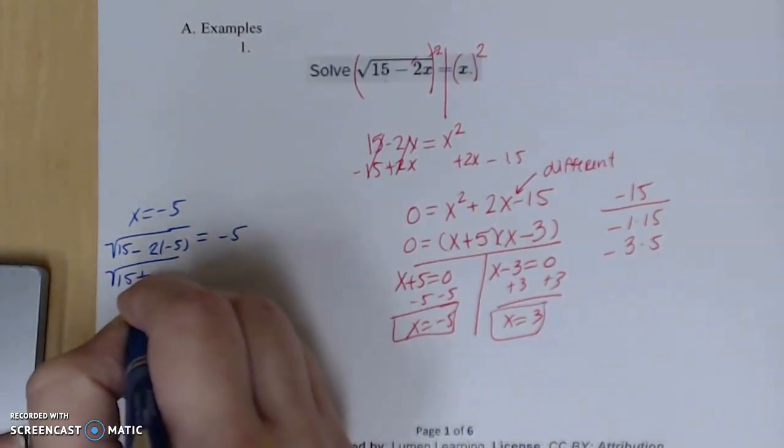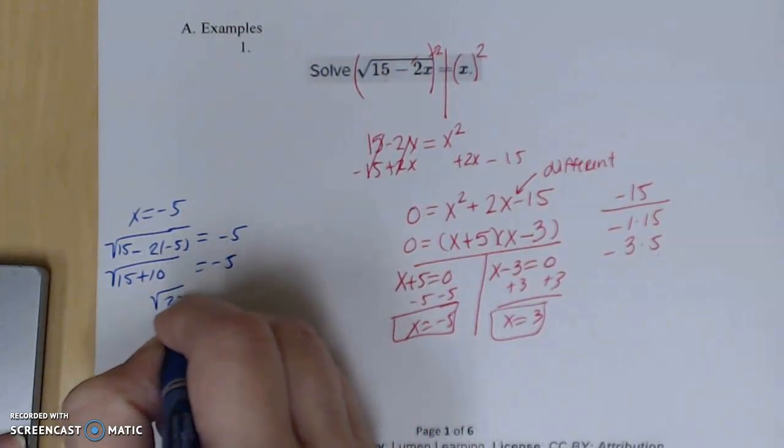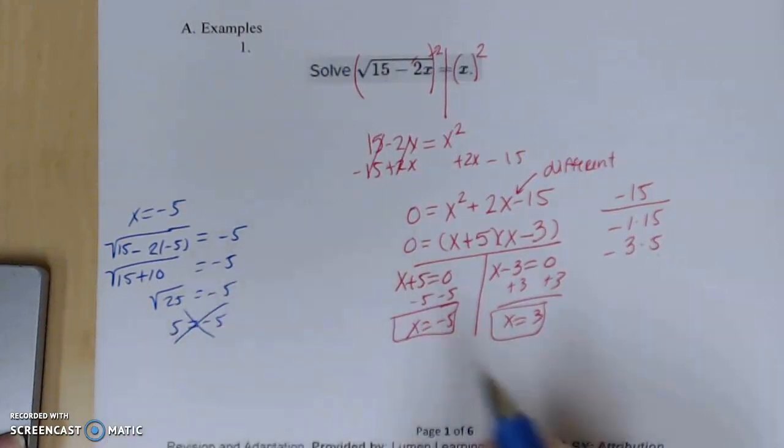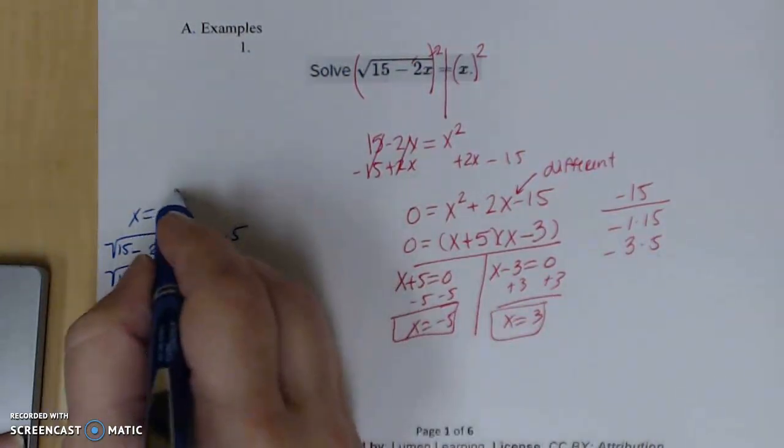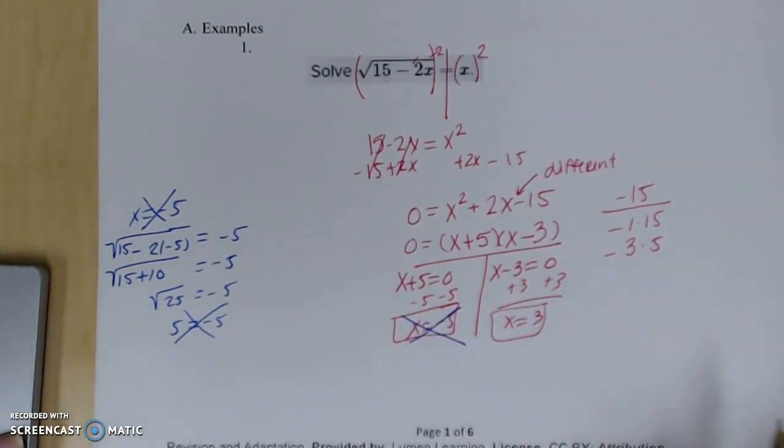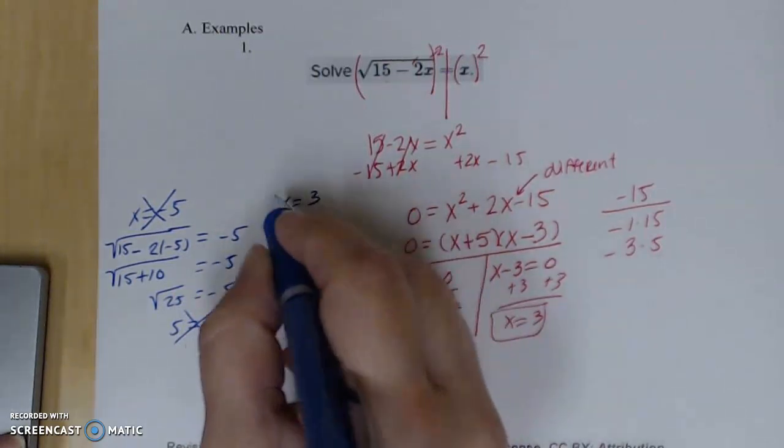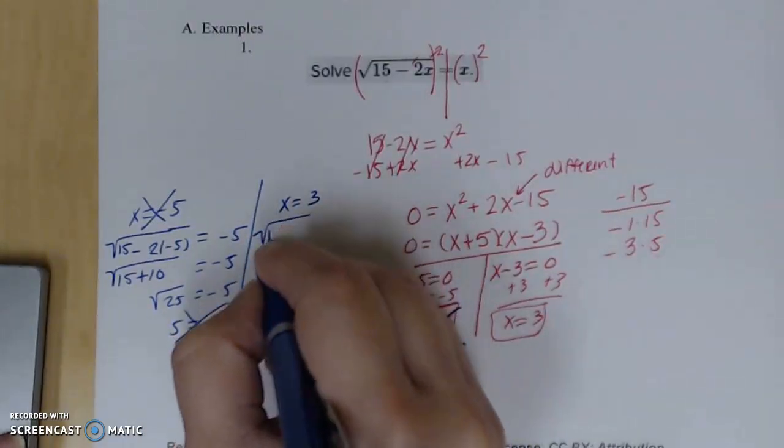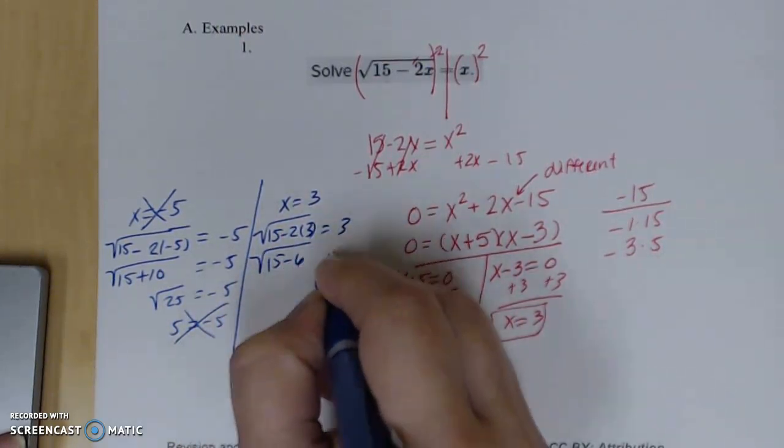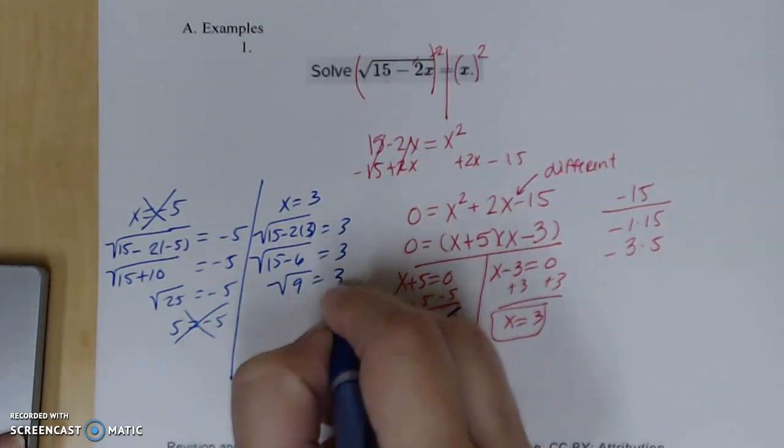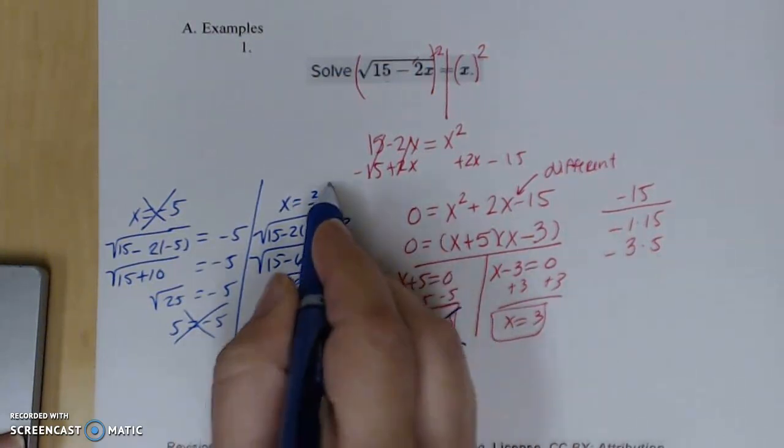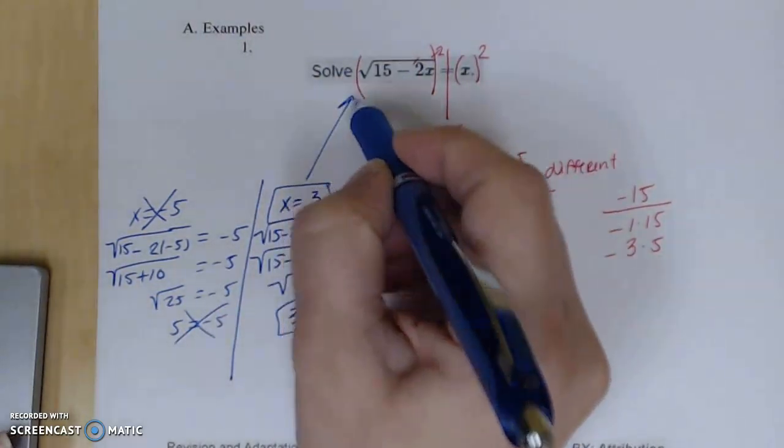Solve this out. I get 15 + 10. I get √25. And the square root of 25 is positive 5. So this does not work. 5 and -5 are not the same value. So this is not a solution to this problem. You can see, now I really need to check 3 because what if I really just messed up the whole problem? So if I plug 3 into it, I get the √(15 - 6). I get the √9. And we can see that √9 is 3. So 3 equals 3. This would be the only solution for this problem.